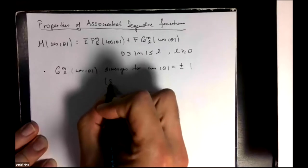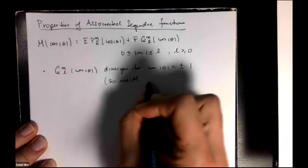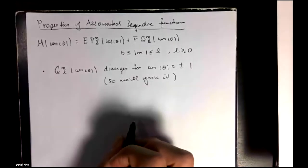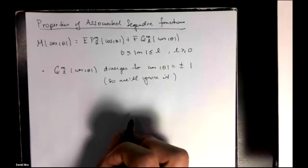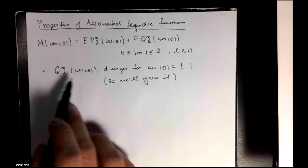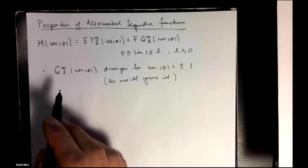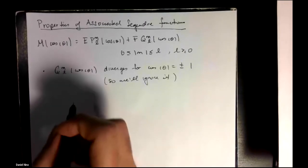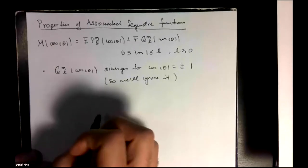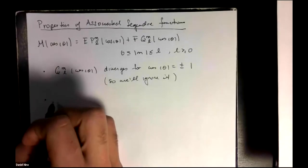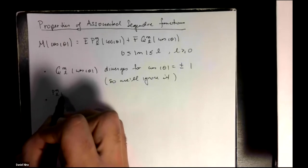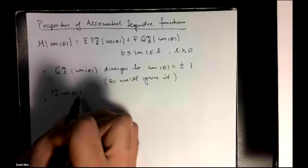So in general, we'll simply ignore this factor. Okay, so we don't have to worry about any further properties, we'll just completely throw it out. So that leaves us with the second one, or rather the first one, P_m^l(cosine theta).